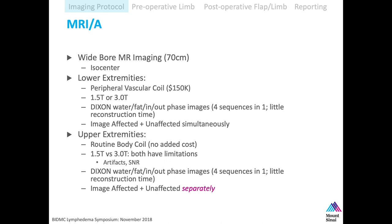1.5 versus 3 Tesla — both have benefits and limitations. I usually scan on 1.5 Tesla because of artifacts, and that's where our expensive coils are. With arms, however, you have to image them separately, which increases scan time for upper extremity patients.